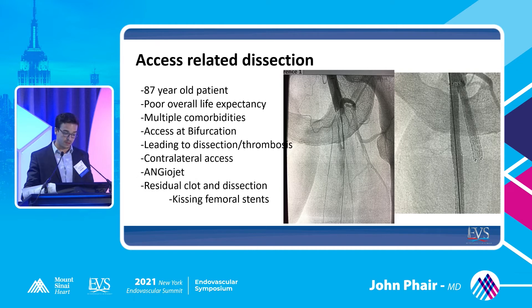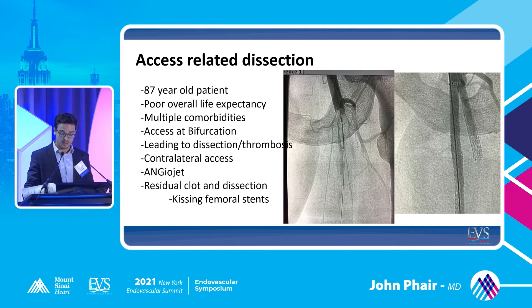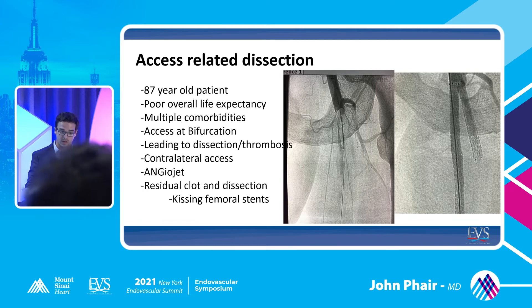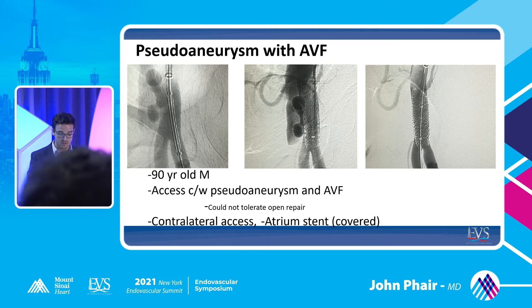This is another patient — and we talked about prognosis and life expectancy — an 87-year-old patient with poor overall life expectancy and multiple comorbidities. The access was done at the bifurcation of the SFA and profunda, which led to dissection and thrombosis. The central tenet if treating this endovascularly is getting contralateral access, which we did, and there was no flow down either vessel. Because of the patient's comorbidities, we put a wire down the profunda and the common femoral artery and stented both with almost kissing stents. In another case — a 90-year-old with poor prognosis — instead of cutting down and repairing primarily an AV fistula and pseudoaneurysm, we got contralateral access and stented with a covered atrium stent across the pseudoaneurysm.